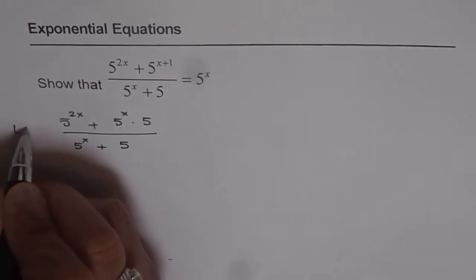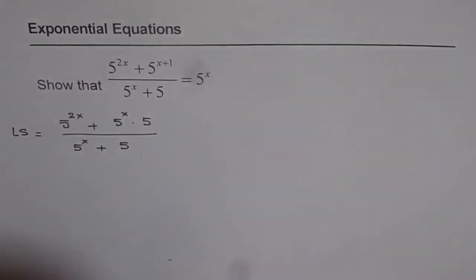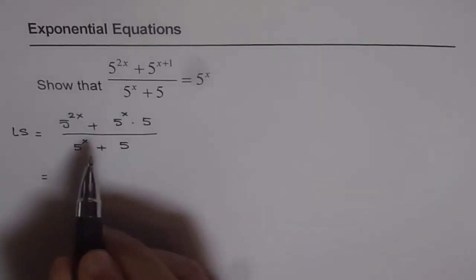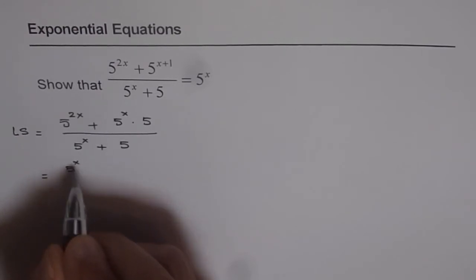Let's start with the left side and then try to prove if it is equal to the right side. In this case we can take 5 to the power of x common. So we have 5 to the power of x common.